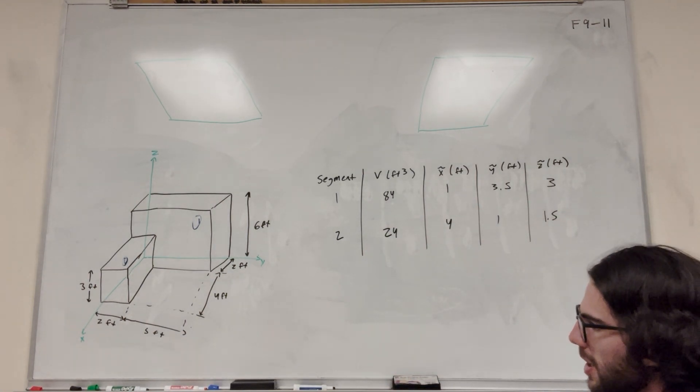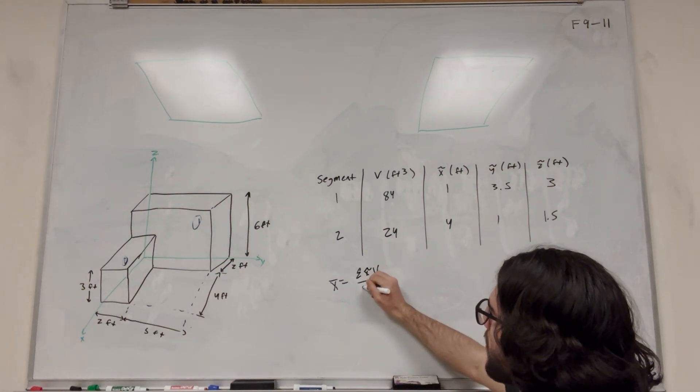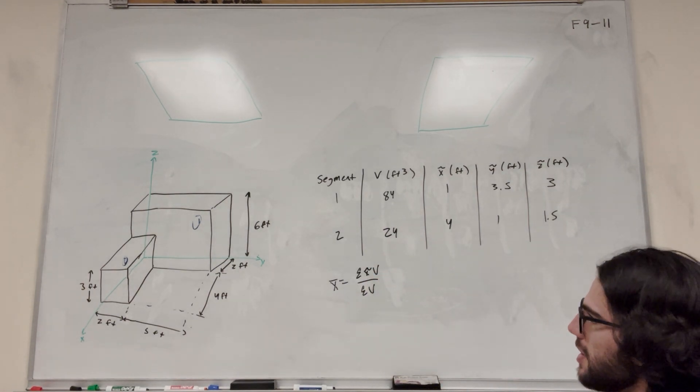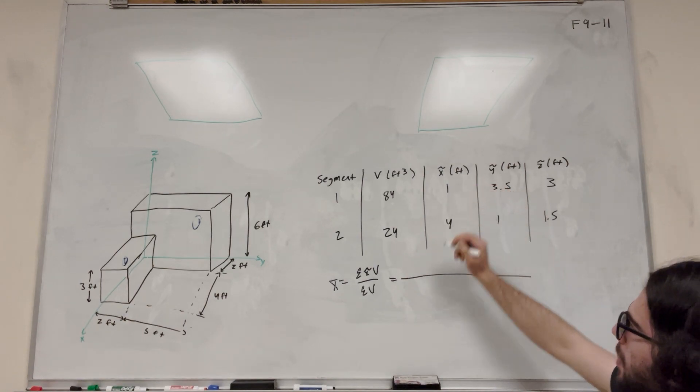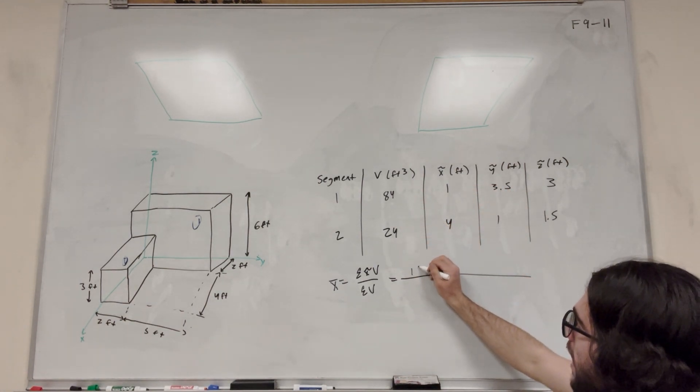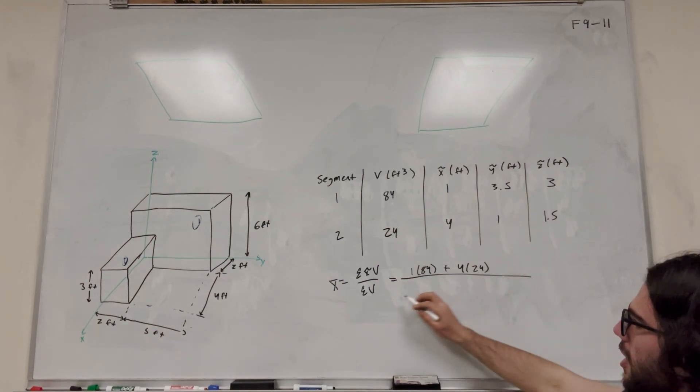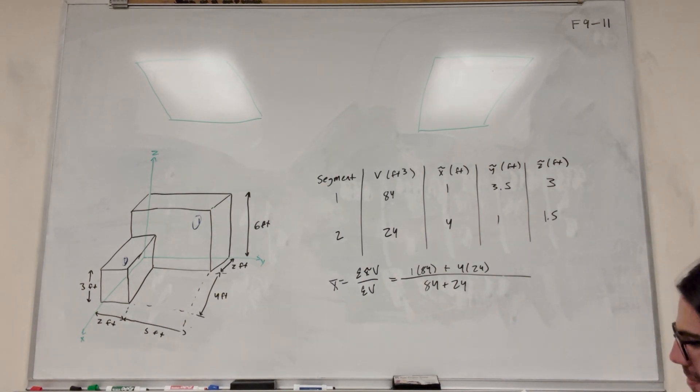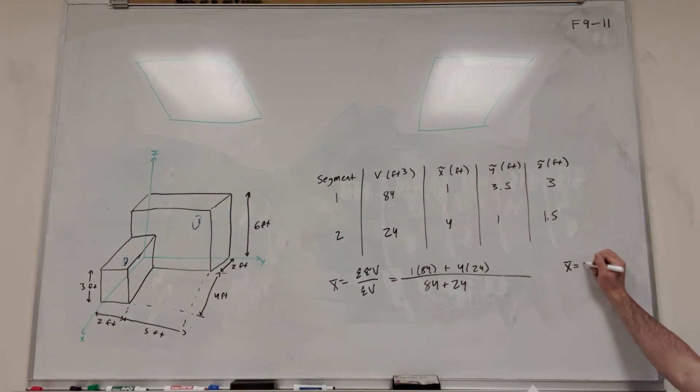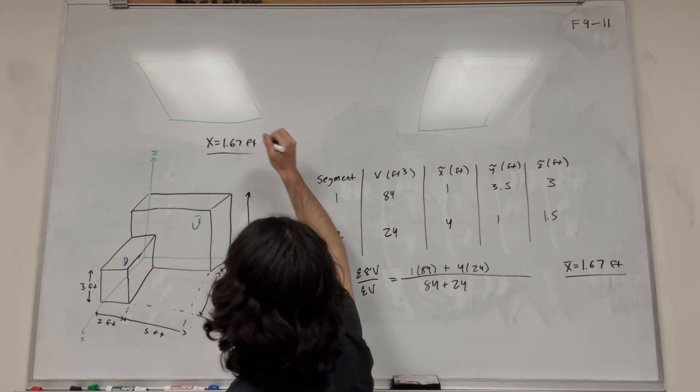So then simply all we have to do is use our formula. So the formula is x bar is equal to sum of the x tilde volumes over sum of the volumes. So let's go ahead and do that. We're going to add up x tilde times the volume for each one of the segments. So in this case, it's going to be one is our first x tilde, and then its volume is 84. And then add that to our next x tilde, which is 4 times its 24. And then on the bottom, we're going to add up the volume, so we're actually going to simply add 84 to 24. So you do the math on this, and you get that x bar is equal to 1.67 feet.